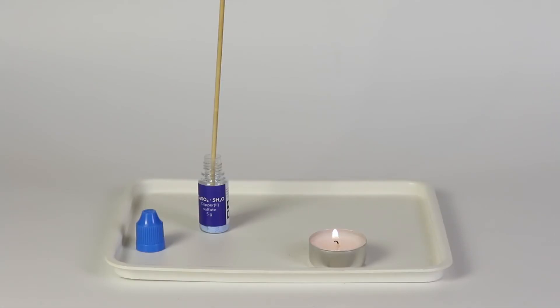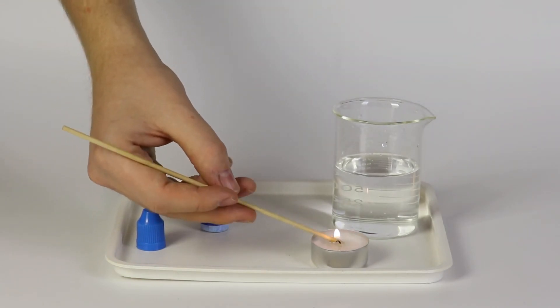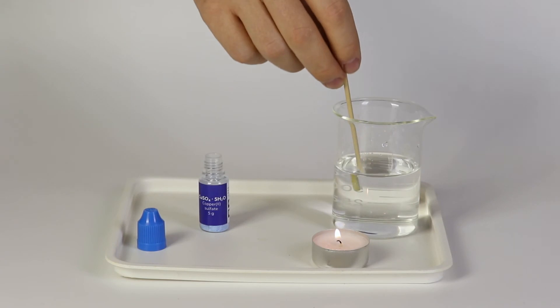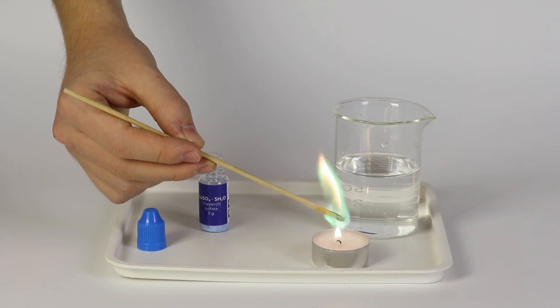Dip the splint into the paraffin once again and after this, into the water in the beaker. Put the splint into the candle flame and you will see a green sparkling flame.